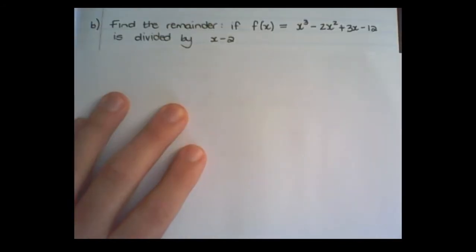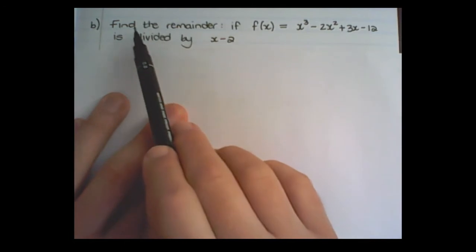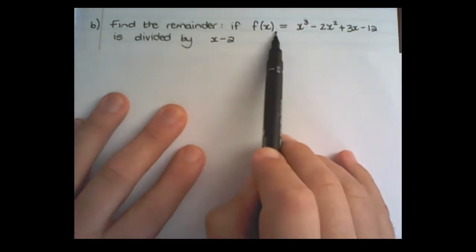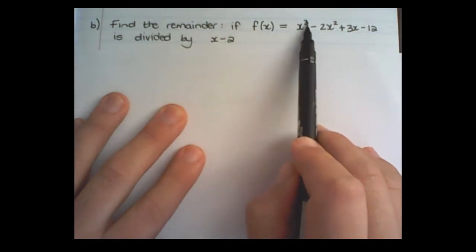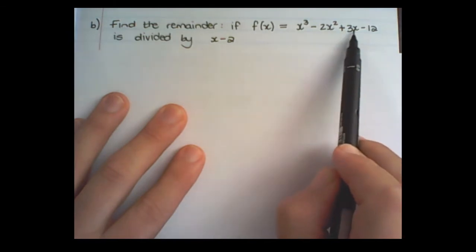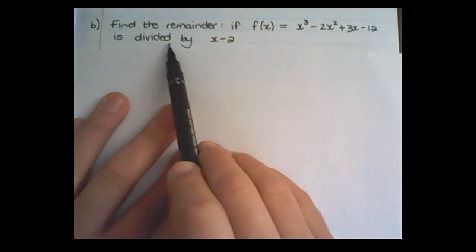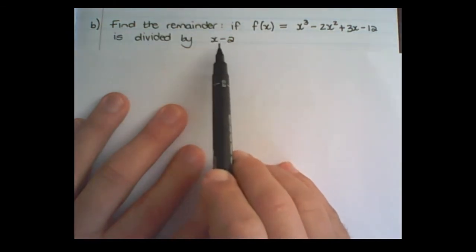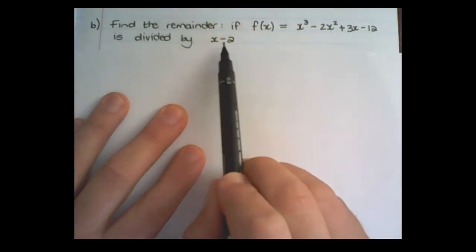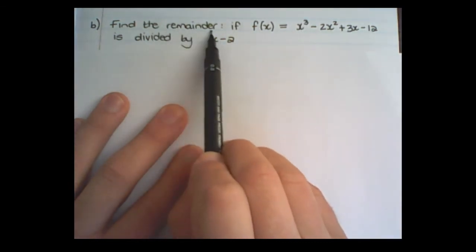Let's work through a more practical example. Find the remainder if fx, which equals x cubed minus 2x squared plus 3x minus 12, is divided by x minus 2. We are not going to divide this. We are simply going to look for the remainder.